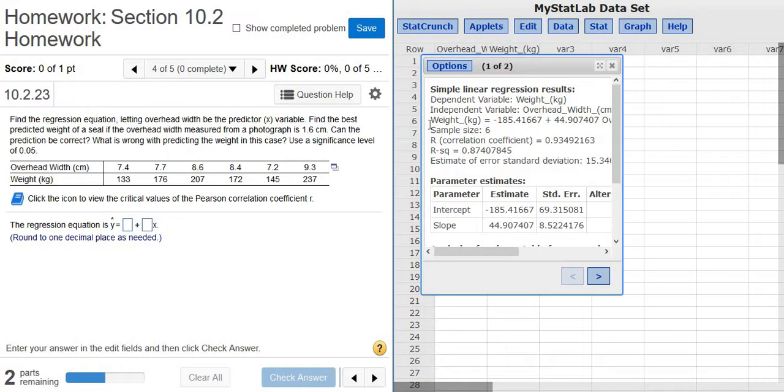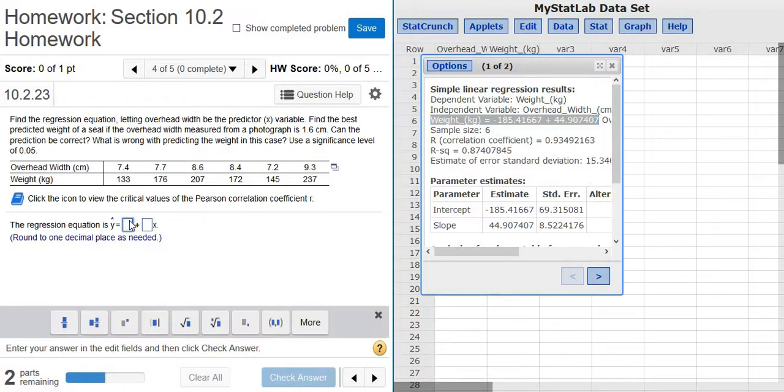So it wants one decimal, so the answer is right here. Weight is the y-value. So negative 185.4.